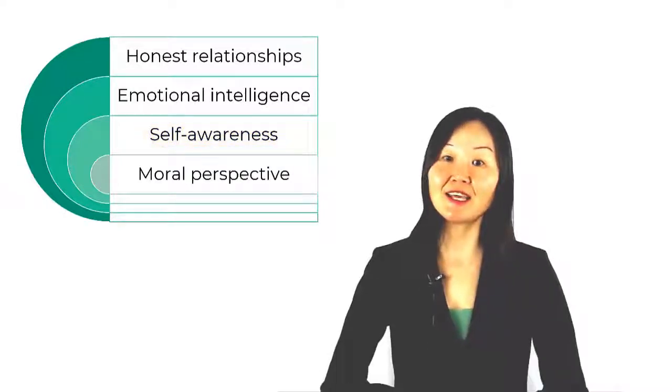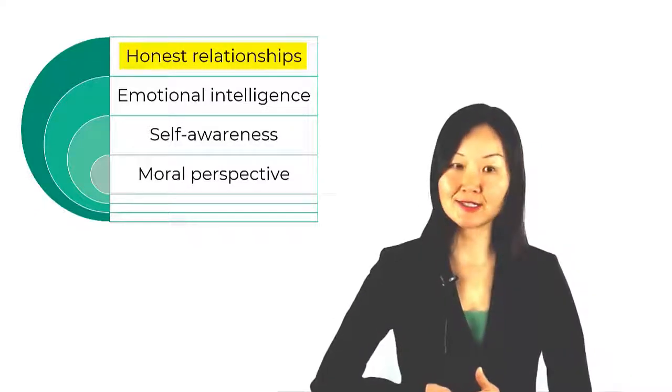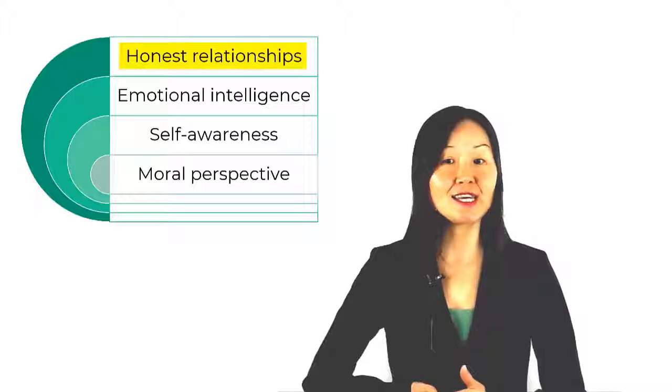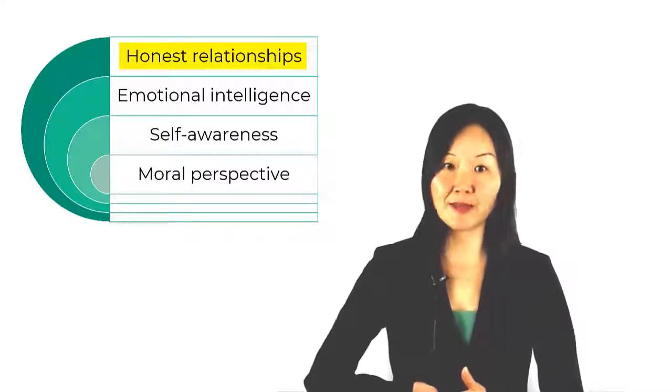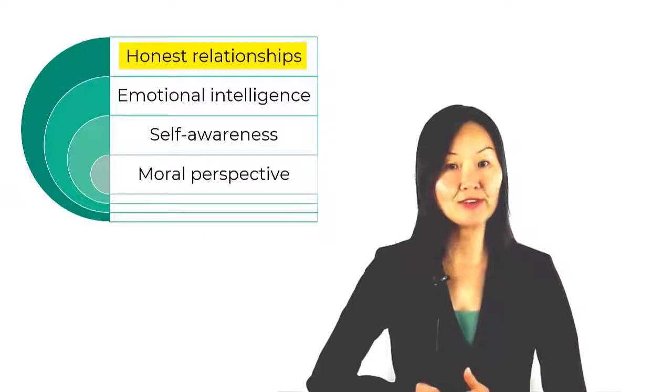Secondly, an authentic leader develops honest relationships with others based on trust and openness since he courageously makes himself transparent, including his feelings, opinions, strengths and weaknesses.